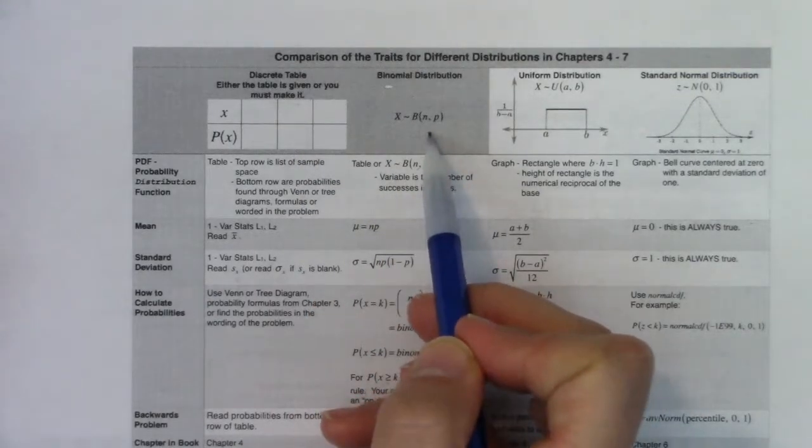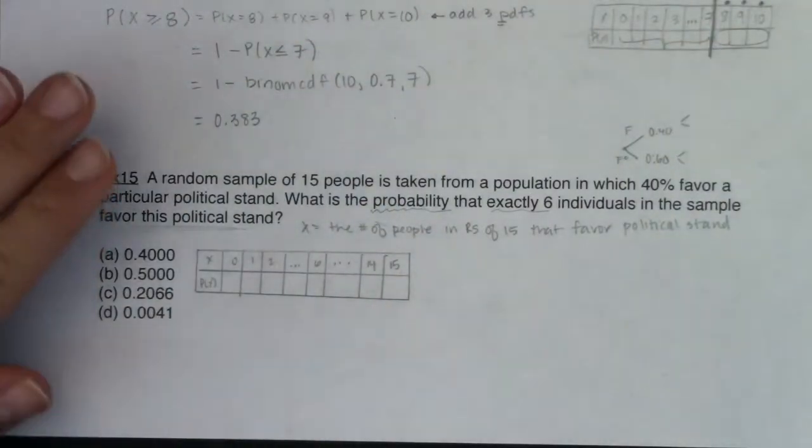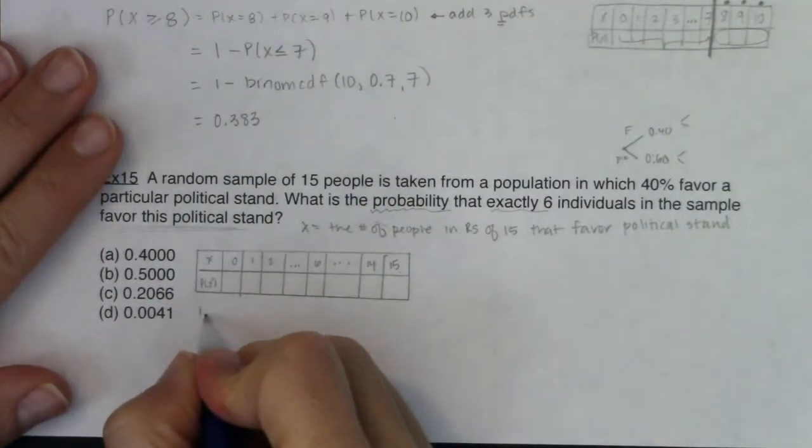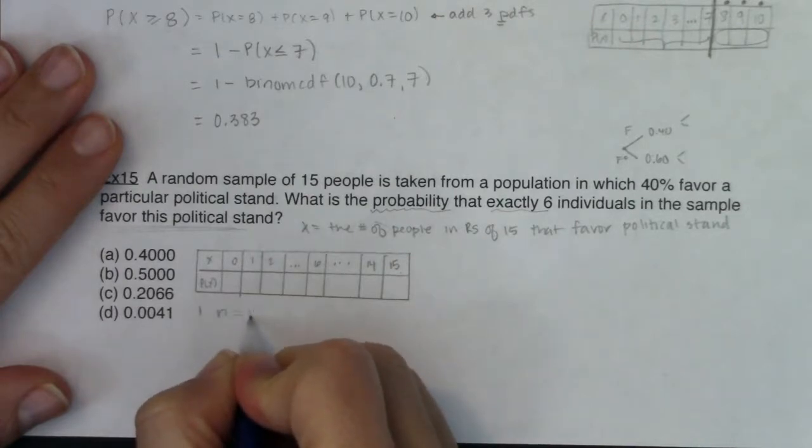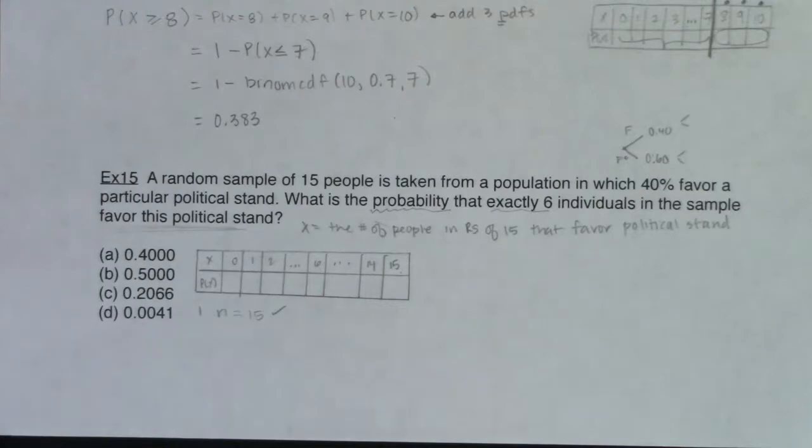It means we're probably binomial. But we've got to check that we're binomial so that we can make sure we're using those rules properly. So let's figure this out. Do I have a fixed number of trials? Sure do. Yeah, I've got 15 folks I'm going to talk to.